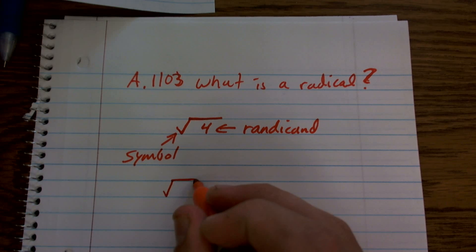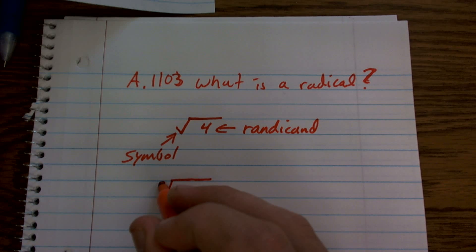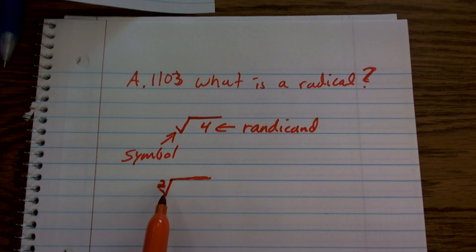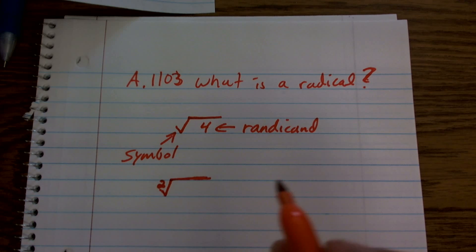And a lot of times, it's important for you to understand, sometimes we can write a little 2 in front of there, and that's to tell you that you're going to take a number multiplied by itself twice to get your number in front.